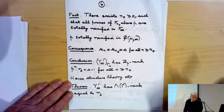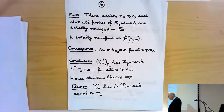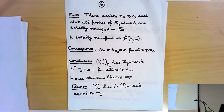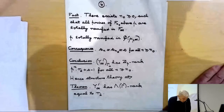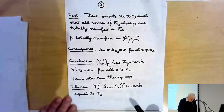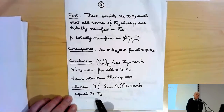By the structure theory — carefully stated in my first lecture — that tells us that the Λ(Γ)-rank of Y∞' is precisely r_2. That is what comes out of the structure theory.